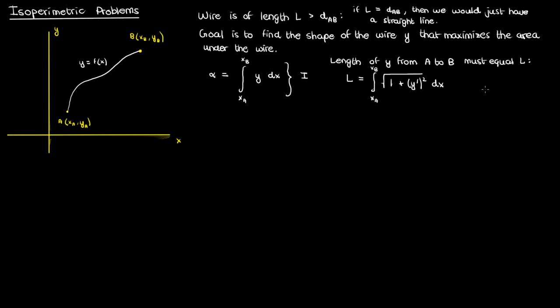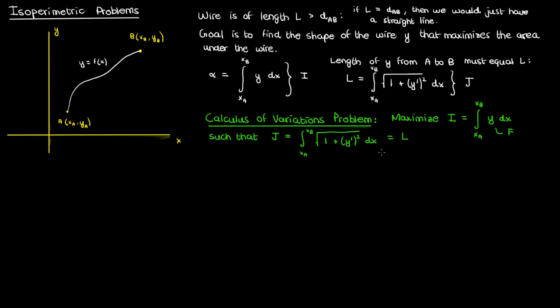That's my constraint and I'm going to call this constraint integral j. In the end I've got a calculus of variations problem which is to maximize the integral of y which I'm going to label as capital F while adhering to the constraint that the length of the curve be L and I'm going to label the expression inside the constraint integral as capital G.